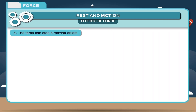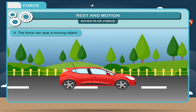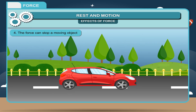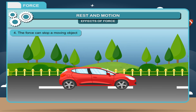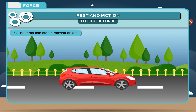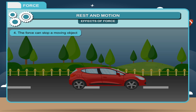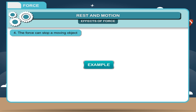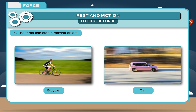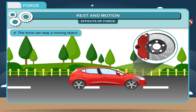The force can stop a moving object. If force is applied in a direction opposite to the motion of an object, its speed will decrease and after some time the body will stop. For example, a moving bicycle or car can be stopped by brakes. The brakes apply a force in the opposite direction of the motion.